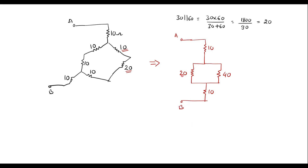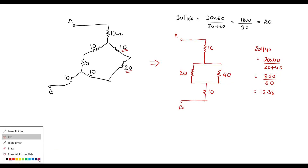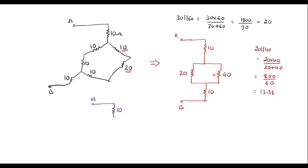Now here we can observe that this 20 and 40 are in parallel, so these two can be replaced by a single value. That is 20 parallel with 40. The value of this is 20 into 40 divided by 20 plus 40, that is 800 divided by 60, which gives 13.33. Now let me draw the final circuit. Here it will be node A with 10 ohm, and these two are replaced by 13.33 ohm.